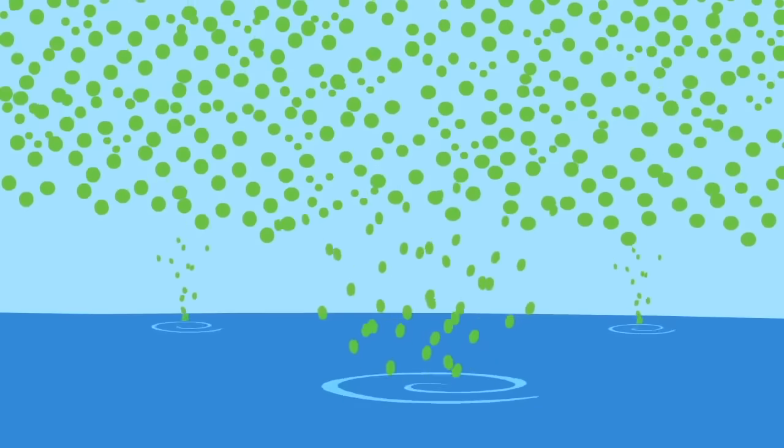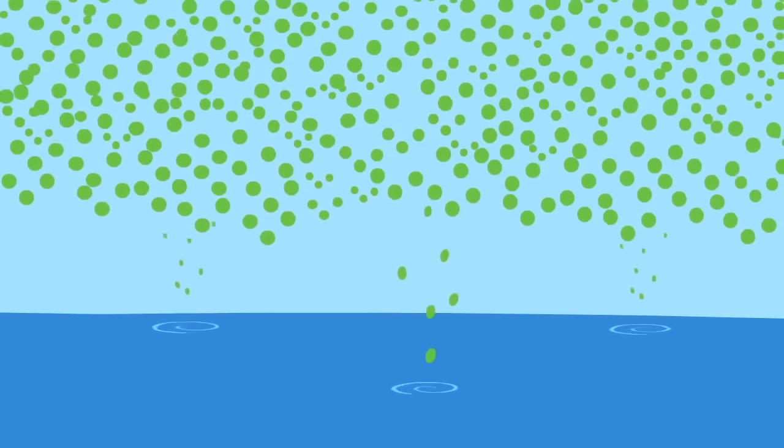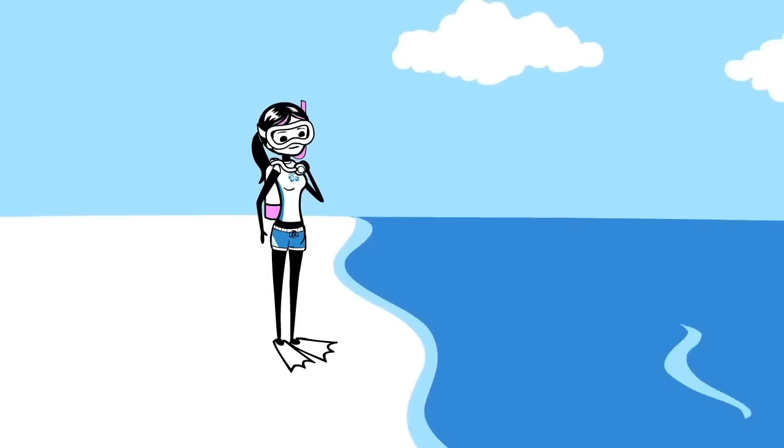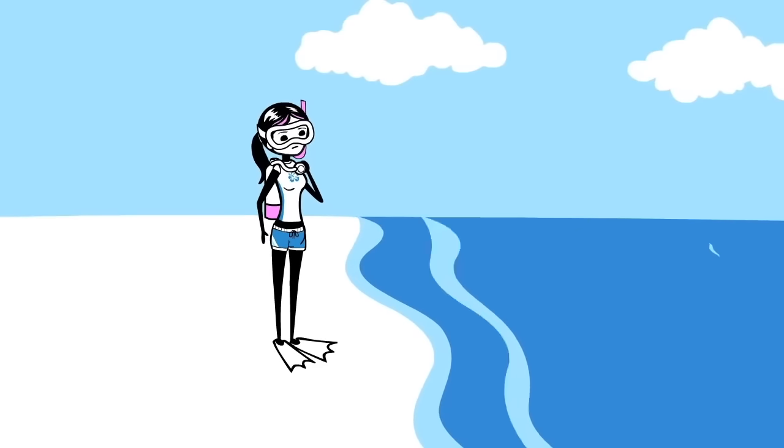But as the ocean warms, it takes up less and less CO2. And with all that CO2 in the sea, scientists are shedding light on an ocean of problems.